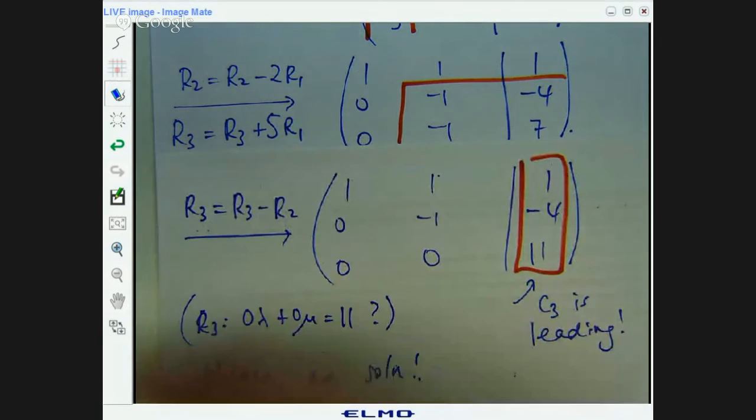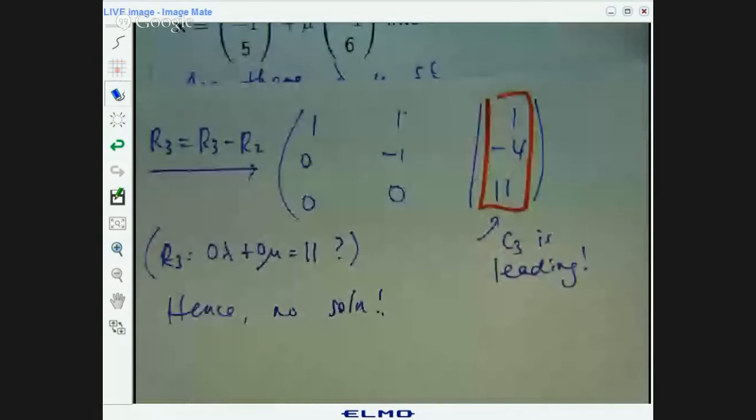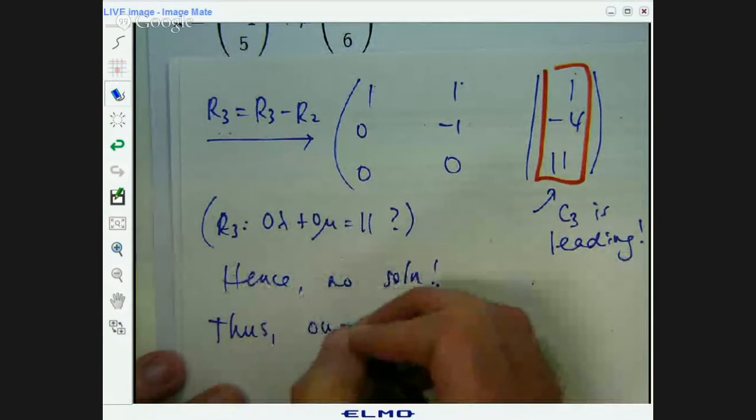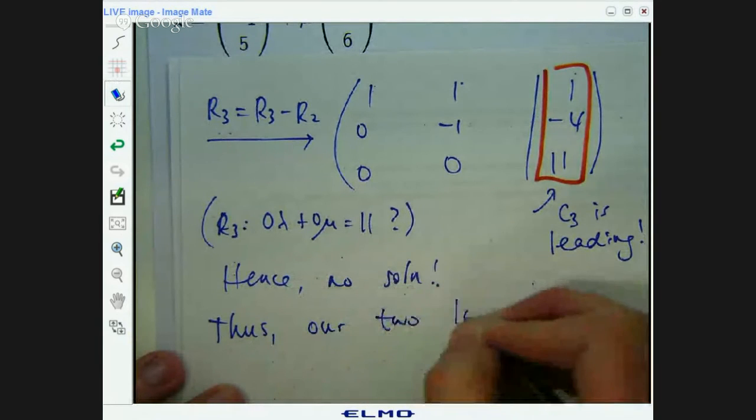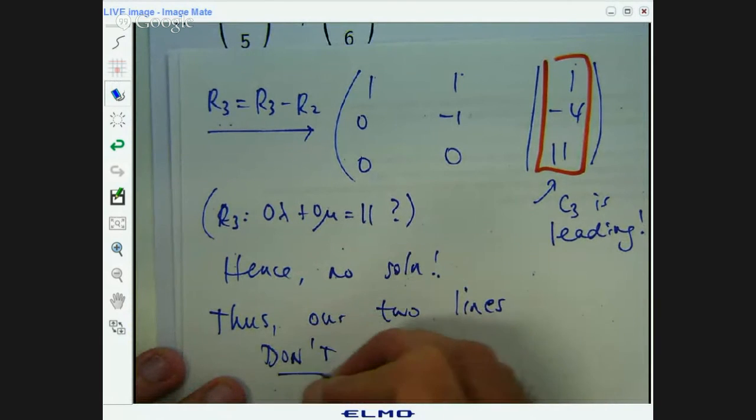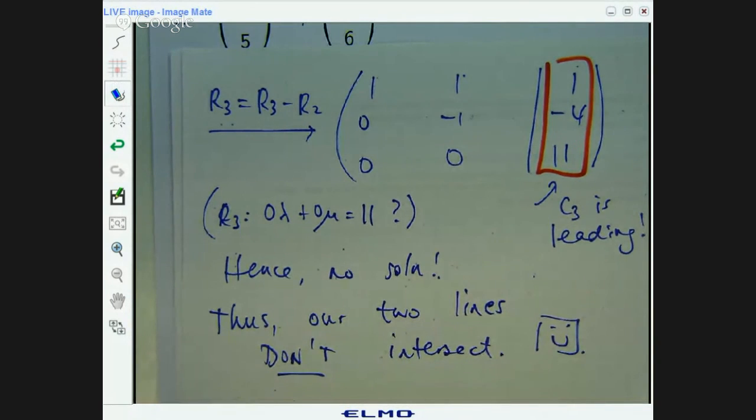What's our conclusion? Do the two lines intersect? They absolutely do not. Our conclusion, thus, our two lines don't intersect. There's an example of how you can connect matrices with geometry and linear systems.